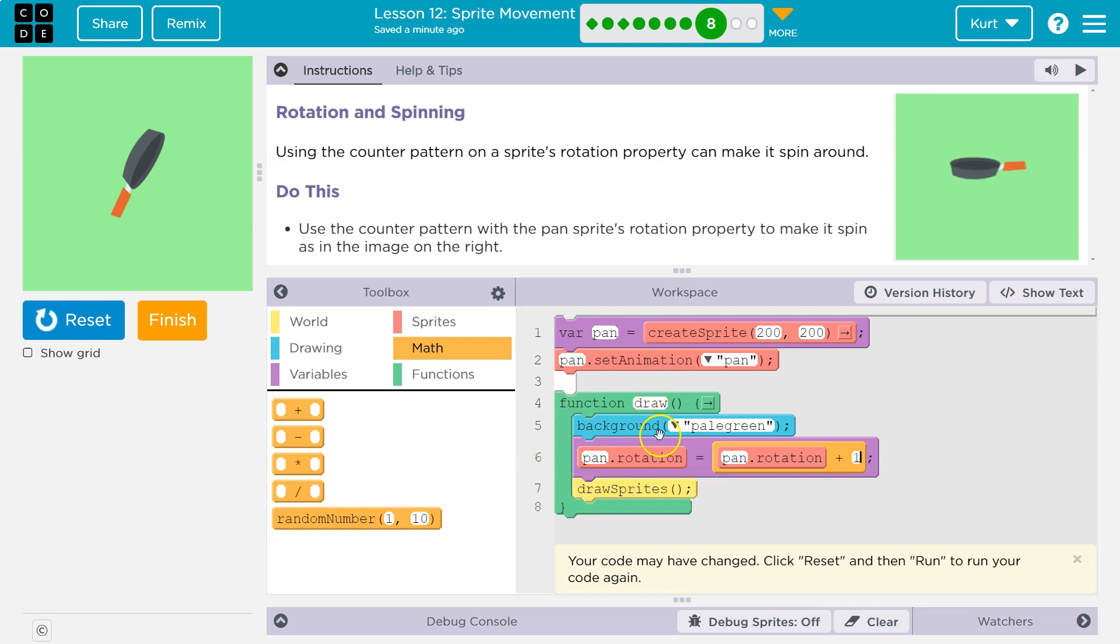And what should happen is 30 times a second, we're telling the computer, hey, draw the screen background. The pan's rotation has a new value. What is it? It's going to be equal to whatever the previous rotation was, which would just be the default. So probably zero, what the pan was originally. So zero plus one, boom. Pan rotation is now equal to zero plus one. Draw the sprite and it slaps it on the screen.